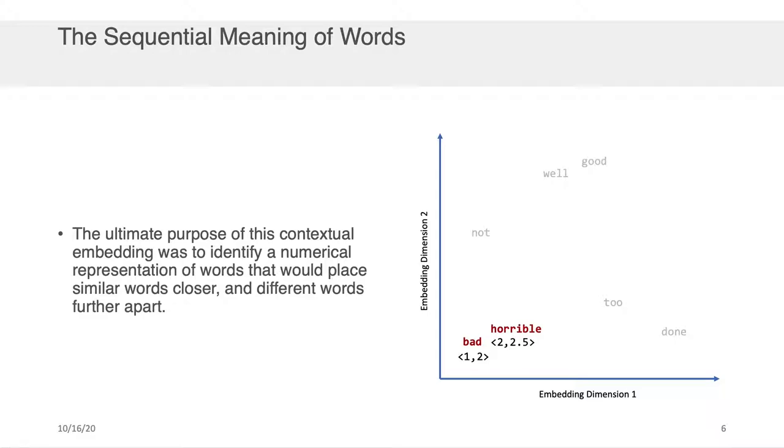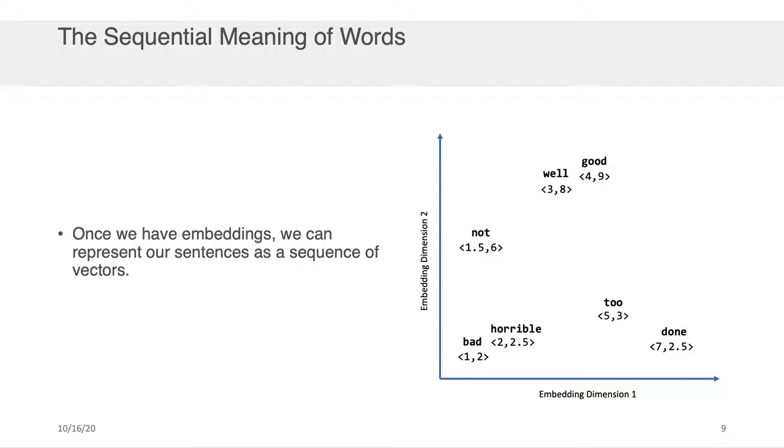Now obviously each of these words has a numerical vector associated with it. So bad, for example, could be the vector 1, 2. Horrible could be the vector 2, 2.5. The same goes for every other point within this space. Now once we have these embeddings we can represent our sentences as a sequence of vectors. We can take, for example, a very simple sentence not bad, well done. We can collect the vector representation for the word not, which is 1.5, 6 followed by the vector representation for bad, for well, and for done. And we will have constructed a matrix or an array that will be n by d where n is the number of words and d is the number of embedding dimensions that we chose to embed our text within.